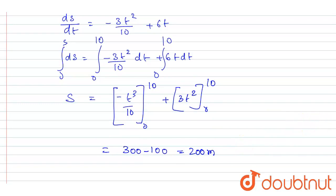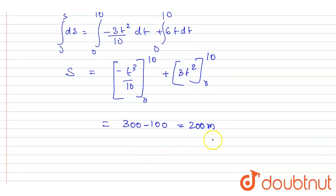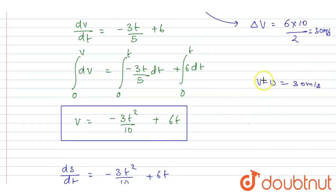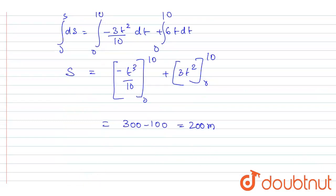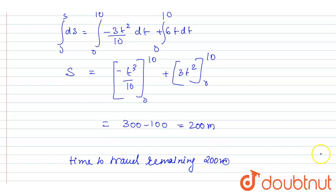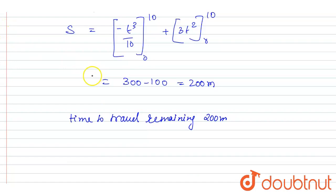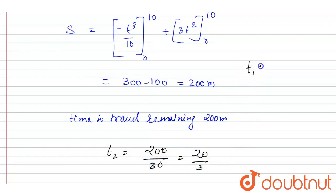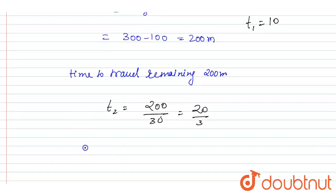The remaining 200 meters will be traveled at the constant speed of 30 meters per second. So the time to travel the remaining 200 meters is t2 equals 200 divided by 30, which is 20 by 3 seconds. The first phase took t1 equals 10 seconds, so total time equals t1 plus t2 equals 10 plus 20 by 3, which equals 50 by 3 seconds.